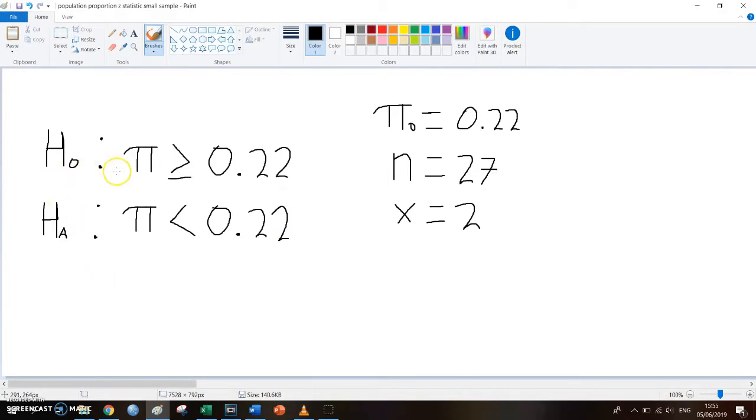So the null hypothesis is that the actual proportion is 22% or higher, because that's what the casino claims. But the commissioner is investigating his alternative hypothesis that the actual proportion is lower than 0.22. So the population proportion is 0.22, the n is 27, and the x is 2.